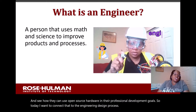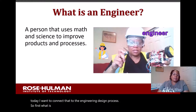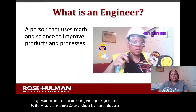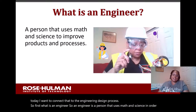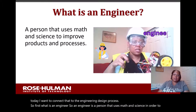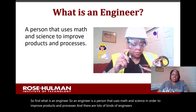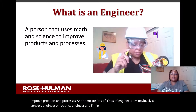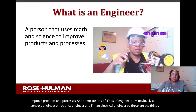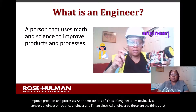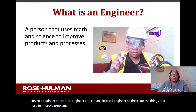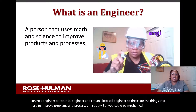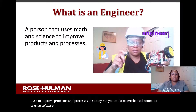So first, what is an engineer? An engineer is a person that uses math and science in order to improve products and processes. There are lots of kinds of engineers. I'm obviously a controls engineer or robotics engineer, and I'm an electrical engineer — these are the things that I use to improve problems and processes in society. But you could be mechanical, computer science, or a software engineer.